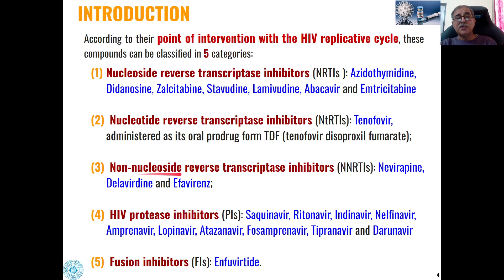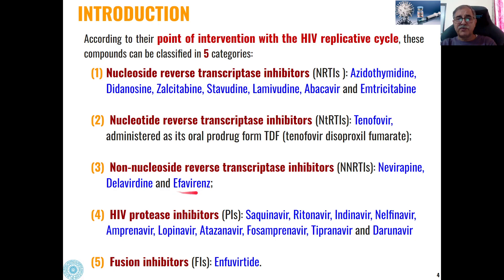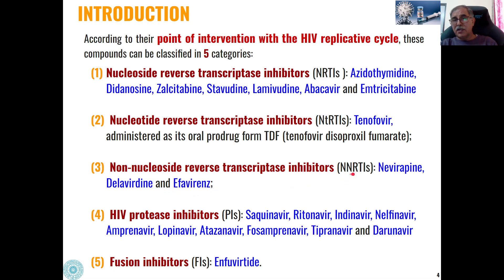The third category is non-nucleoside reverse transcriptase inhibitors. Examples are nevirapine, delavirdine, and efavirenz. All these are commonly used as NNRTIs.